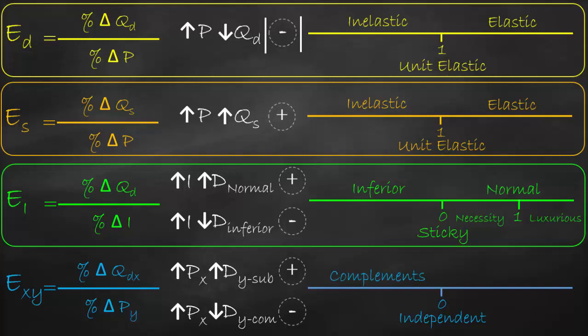To summarize: if cross price elasticity is negative, the two goods are complements; if it's positive, the two goods are substitutes; and if it's zero, the goods are independent and do not affect each other.